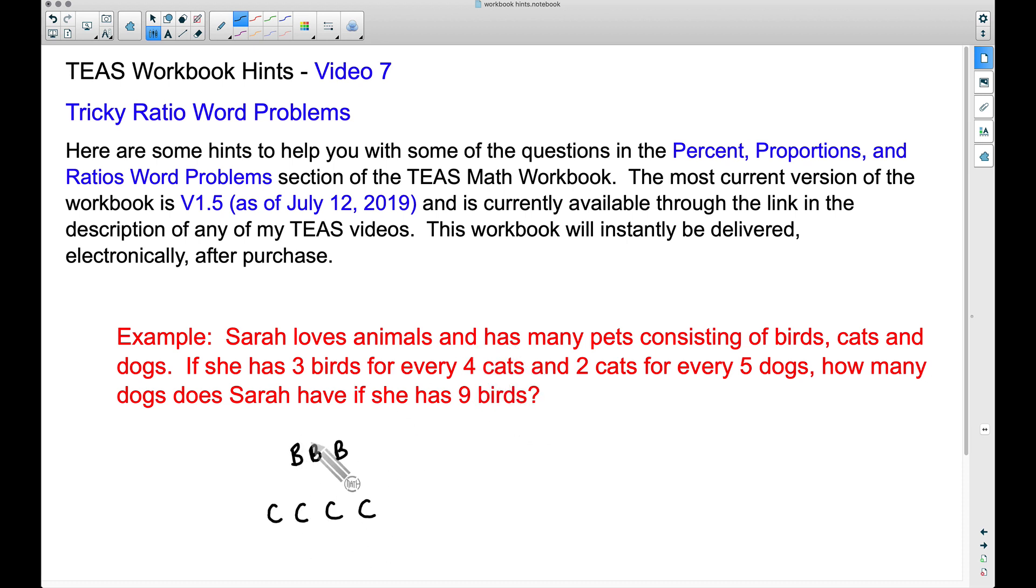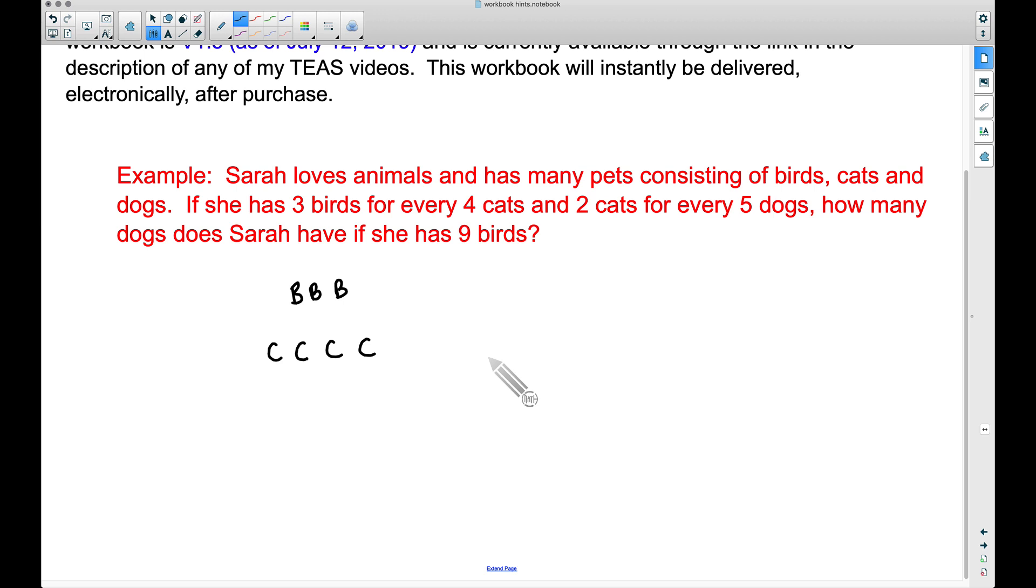So notice I have three B's, that's three birds, and for every three birds there are four cats. And for every two cats she has five dogs. So let's think about that: for every two cats there are five dogs. So for these two cats we're gonna have five dogs, and again for these two cats she's gonna have five dogs.